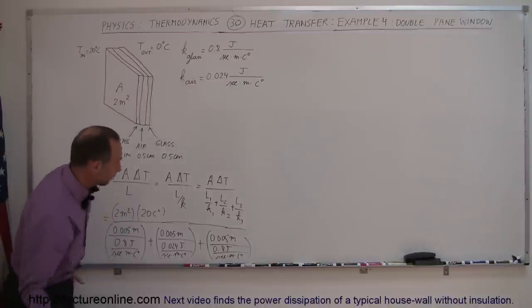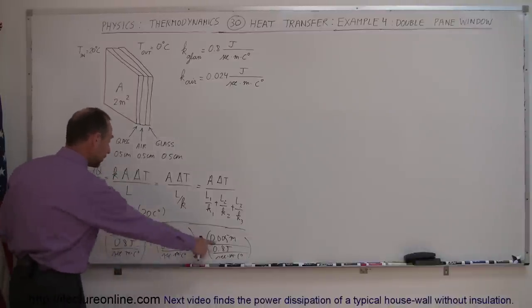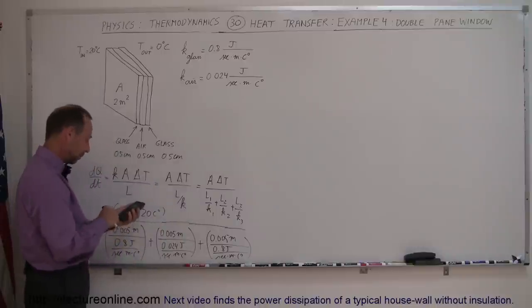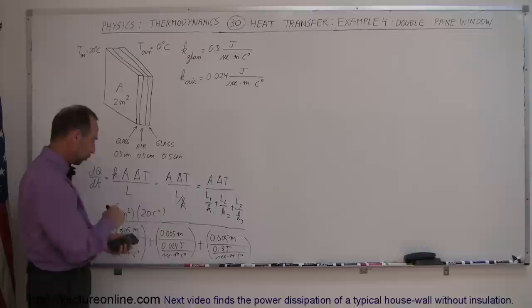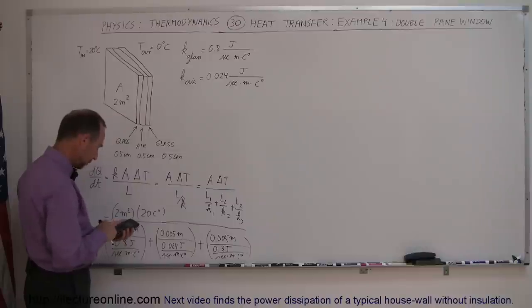Let's go ahead and calculate that. In the denominator, we have two of these terms, so we'll take 0.005 divided by 0.8 and double that because there's two layers, and we add that to this following layer, which is 0.005 divided by 0.024.